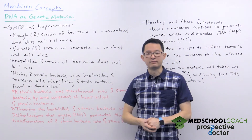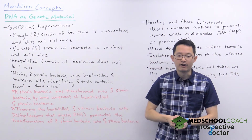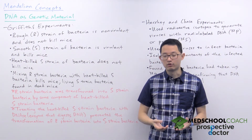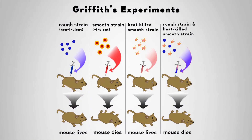Let's start with the Griffith's experiments. We can understand how the experiments that Griffiths performed by taking a look at this diagram. Griffiths was studying bacteria that produced the disease pneumonia. He was studying two different strains of bacteria. One of the strains had a rough texture, so we called these the rough strain or the R strain. When he injected mice with the R strain of bacteria the mice did not die.